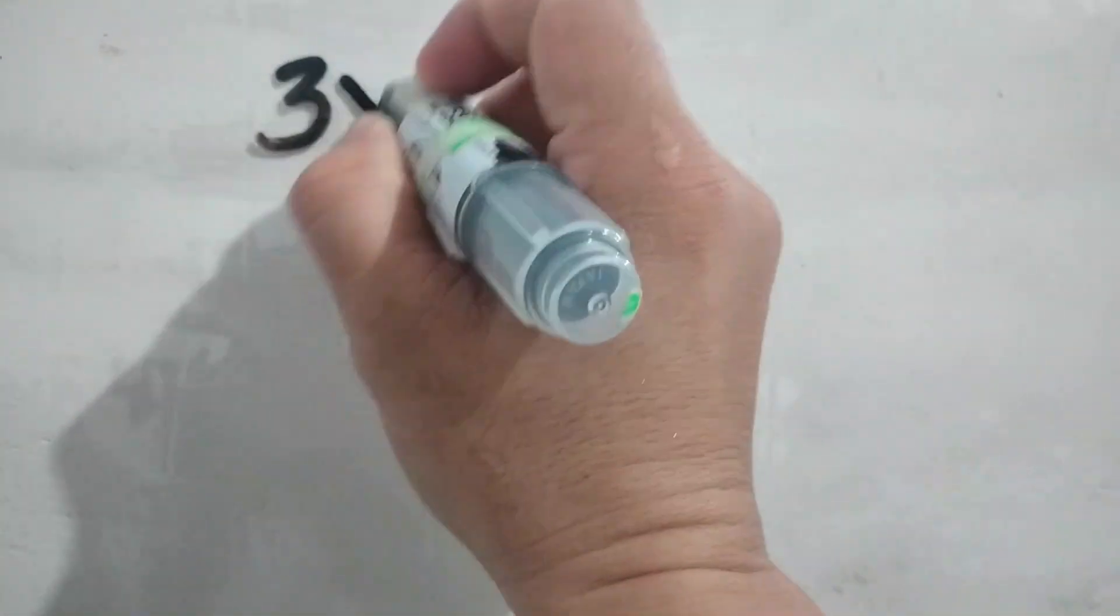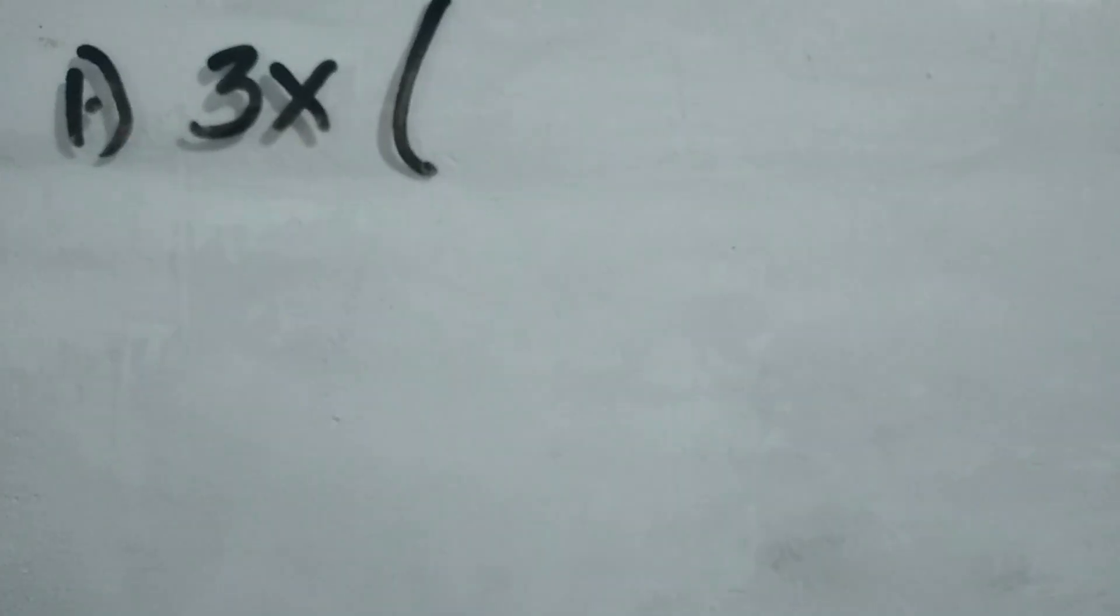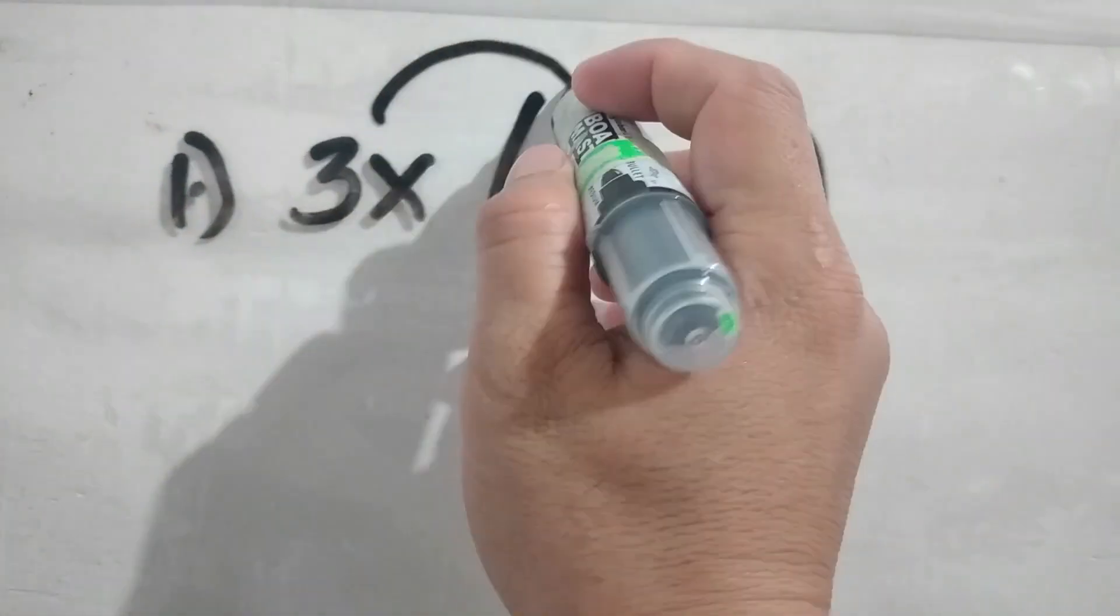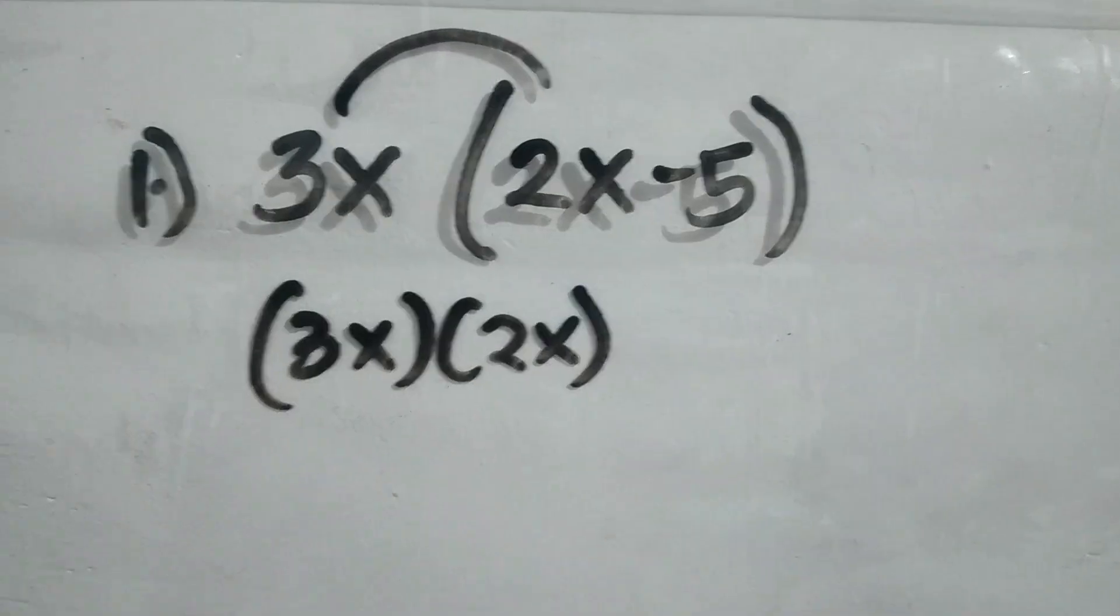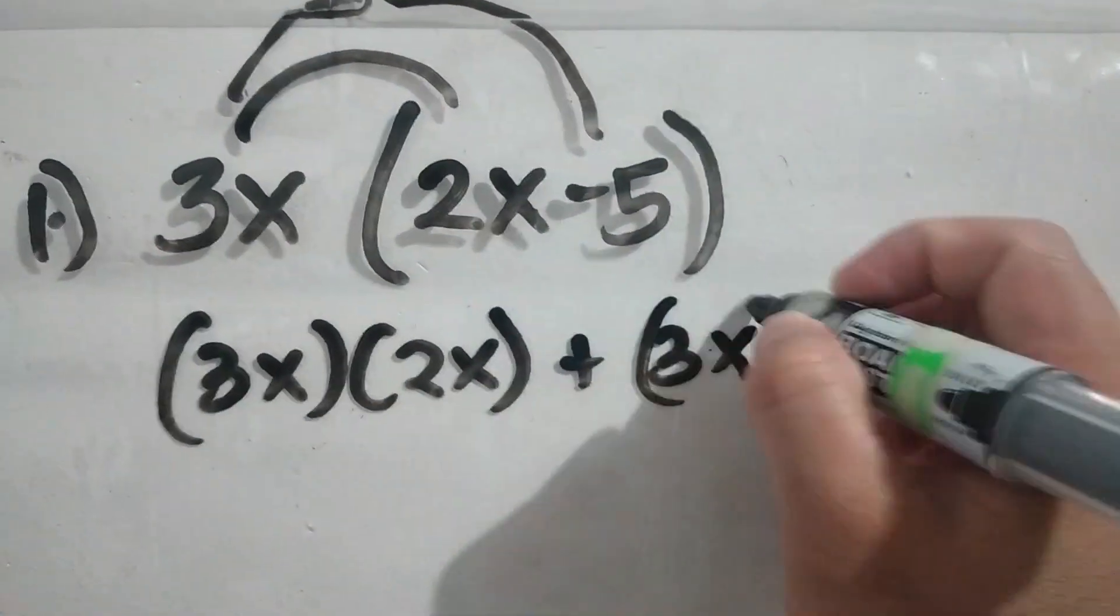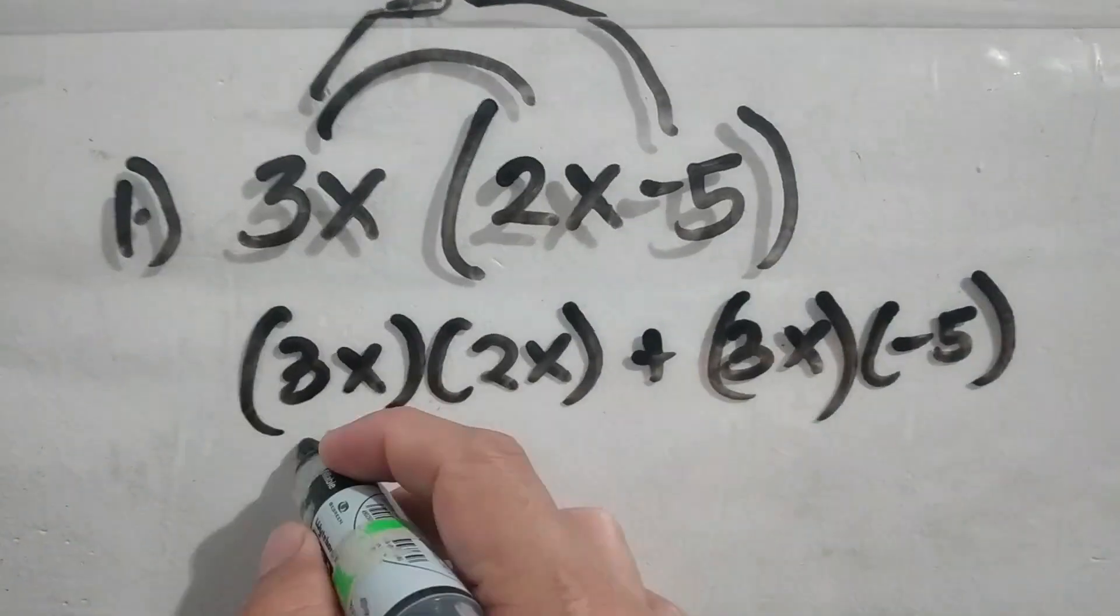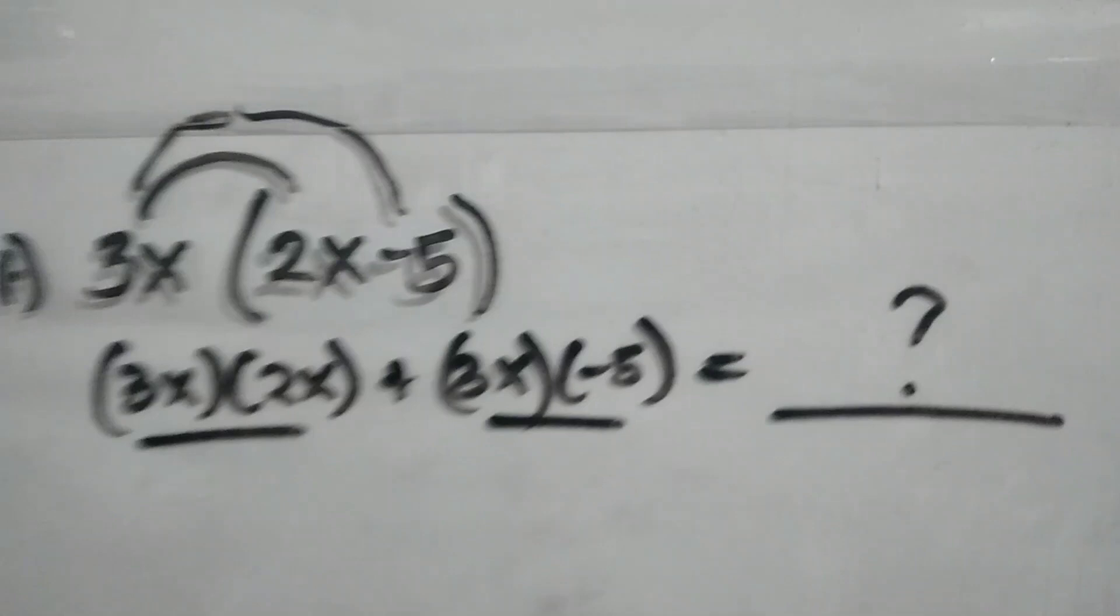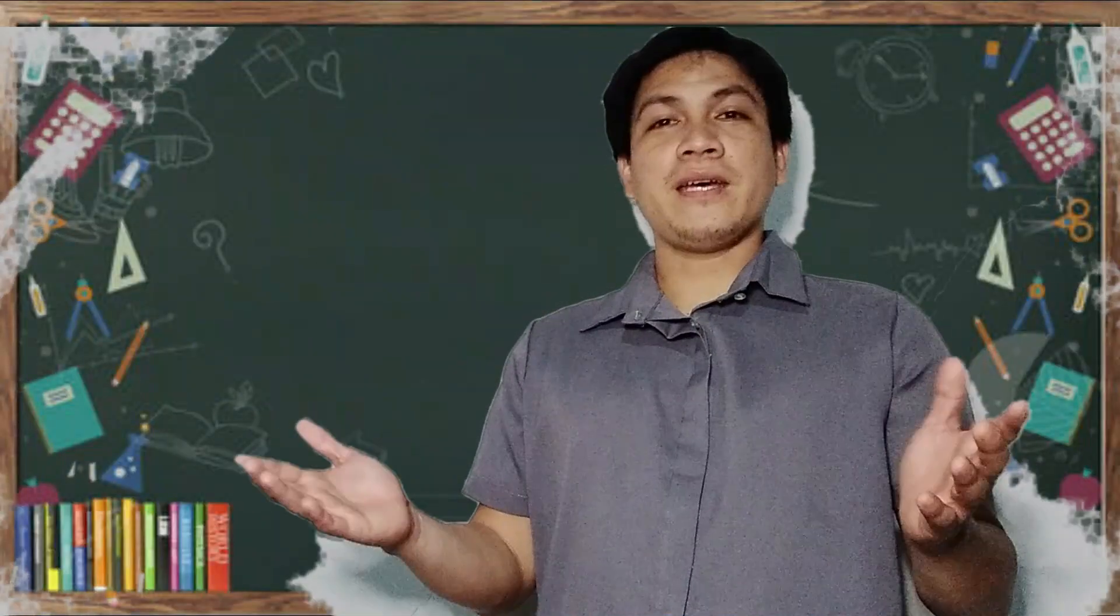Number one. How do we multiply 3x times 2x minus 5? Applying the distributive property of equality, we just multiply 3x to 2x and 3x to negative 5. And guess what will be the product?